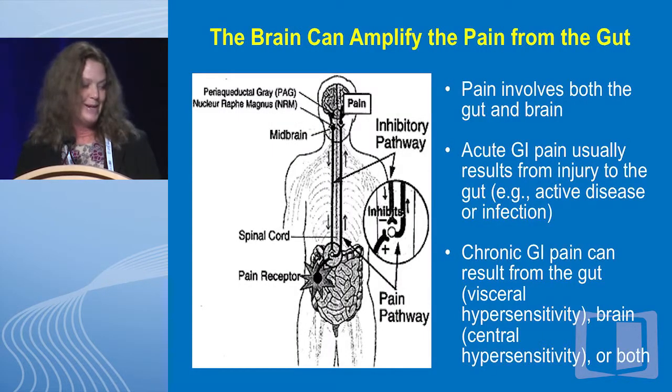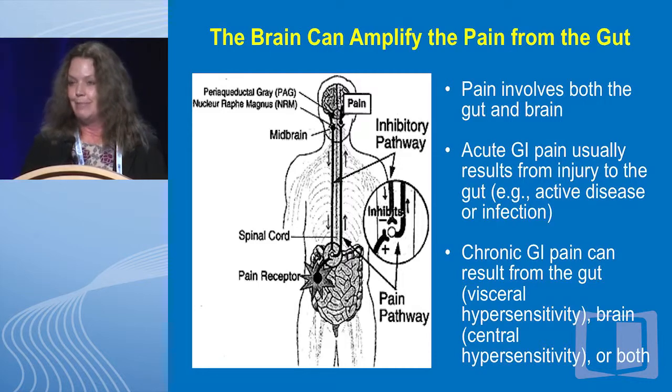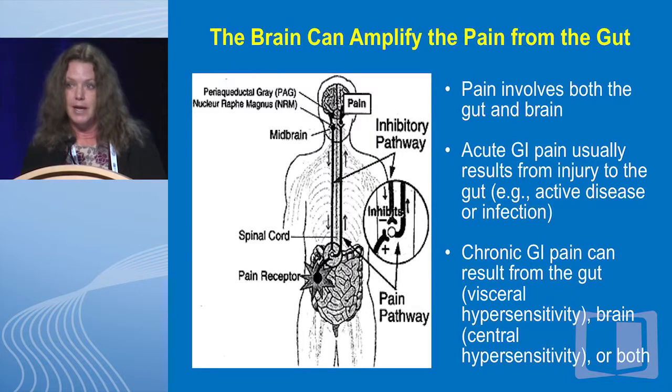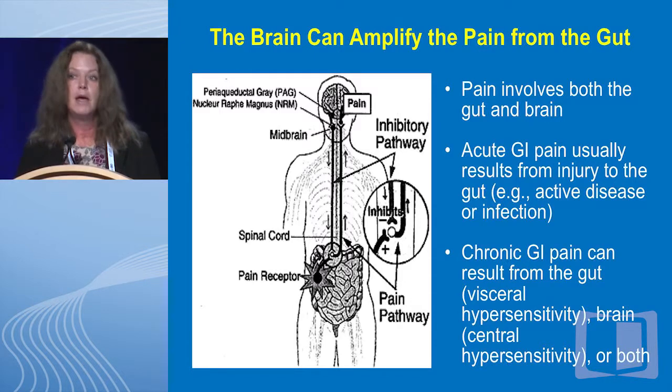Now enters the brain. Whatever your source of pain, the brain can amplify it. There's growing work involving neuroimaging of patients who are reporting visceral pain, patients having rectal distension. We know that pain involves both the gut and the brain. Acute GI pain is more linked to disease or mechanical factors, but chronic GI pain can be a combination of gut and brain — and sometimes it can really be things going on with the brain amplifying the signal.